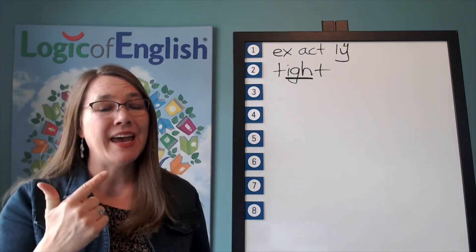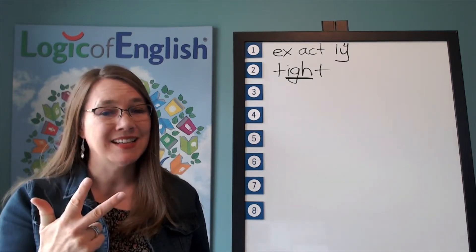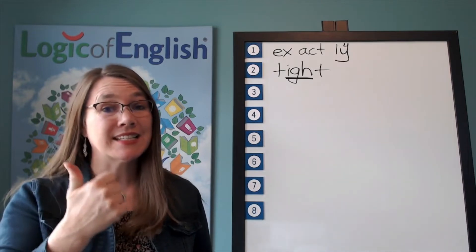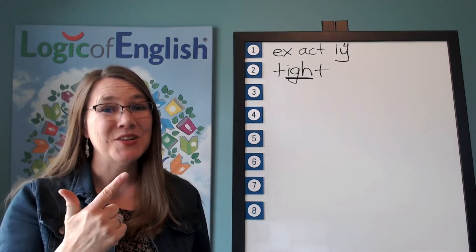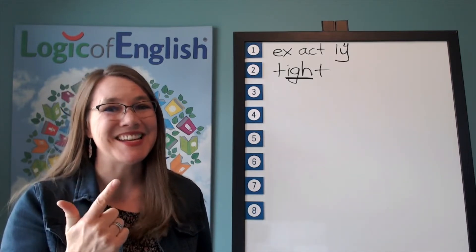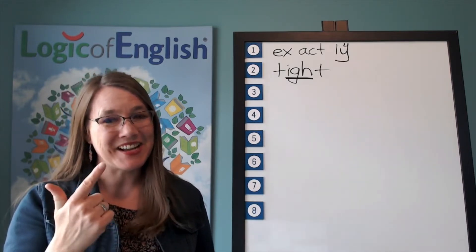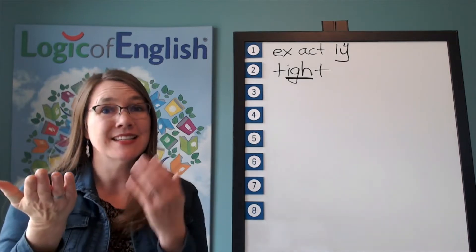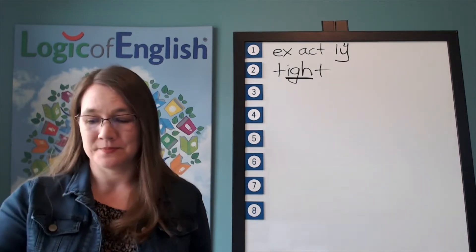M-E-S. The second syllable is see. S-E. You've got it. It's a Y-I-E.